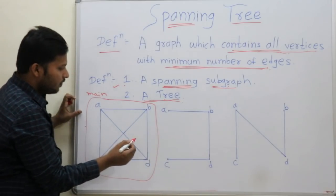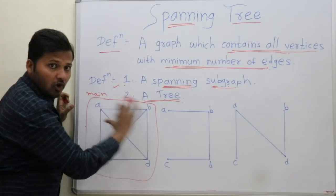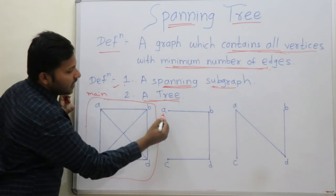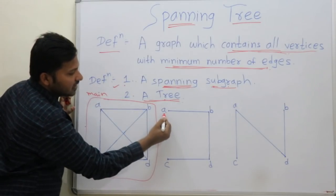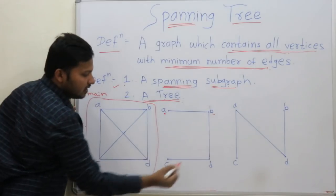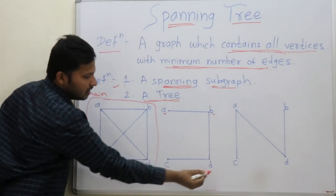We have to take all the vertices. We have taken all the vertices here: A, B, C, D.